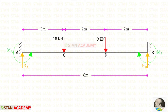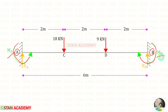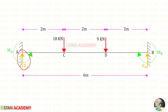We know that in the fixed beam, at both ends we have moments. At point A we have moment MA, and at point B we have moment MB. Also, we have the vertical reactions: at point A we have reaction RA, and at point B we have reaction RB.